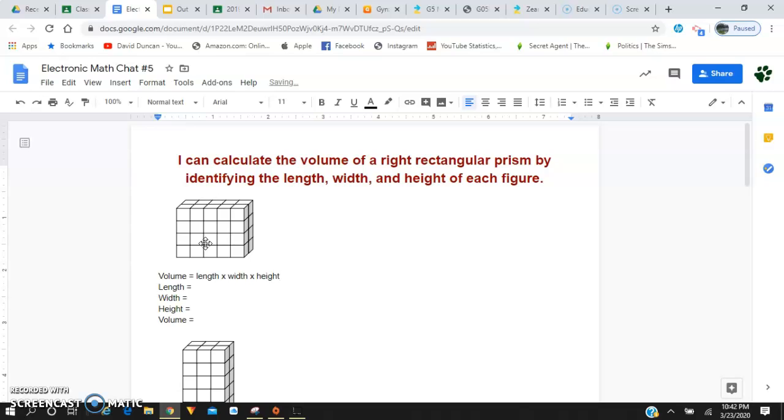So if we know that once we identify the length, width, and height of each right rectangular prism, then what we need to do with those measurements is we need to multiply each of them, and that's going to get us the overall volume of each right rectangular prism.